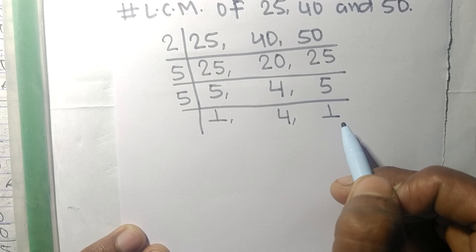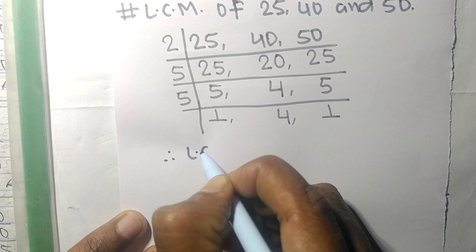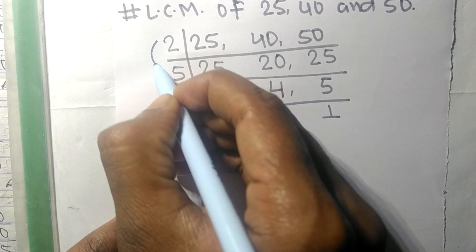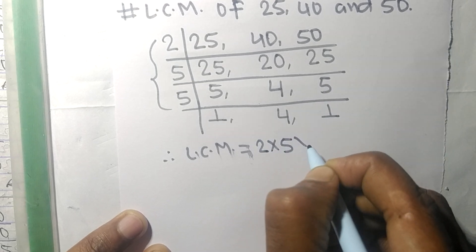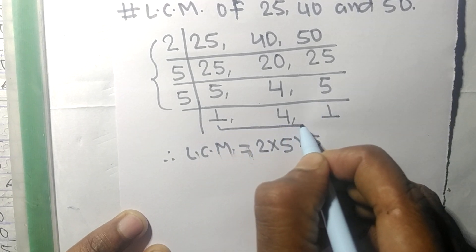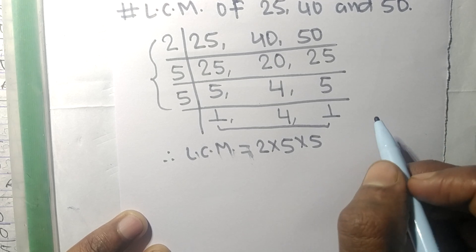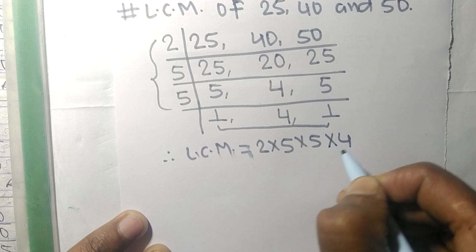Now the numbers 1, 4, and 1 are not divisible by same number. Therefore its LCM is equal to, from this side it is 2 times 5 times 5, and from this side we choose the numbers greater than 1, that is 4, so multiplied by 4.